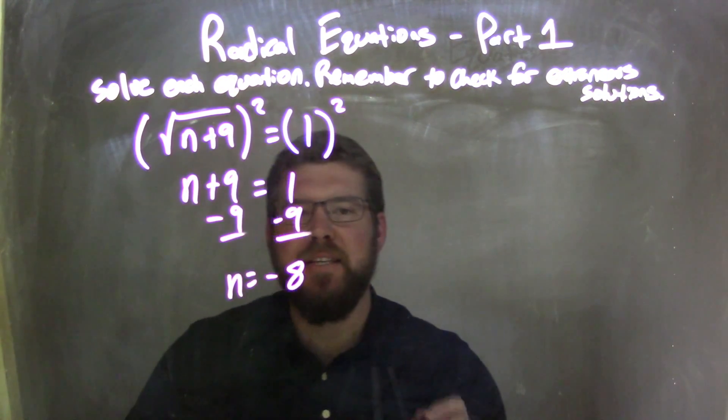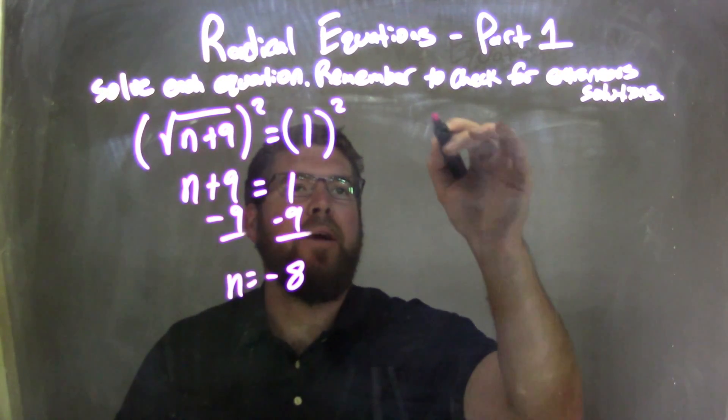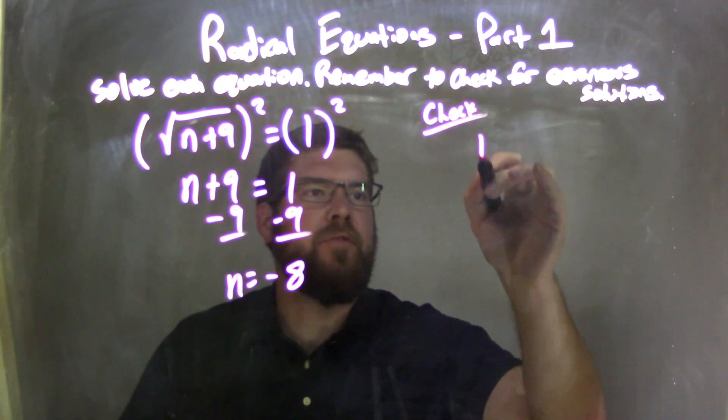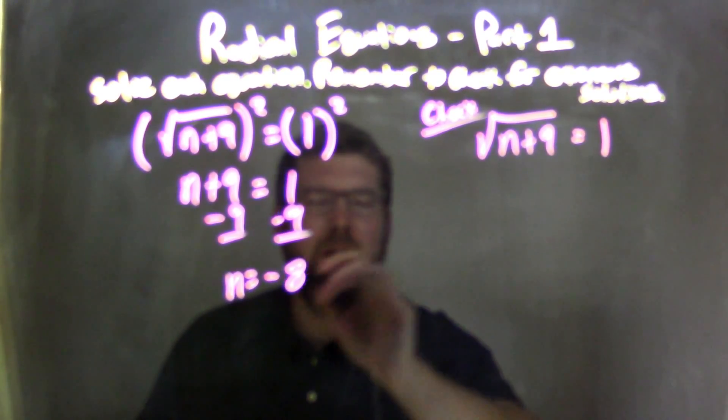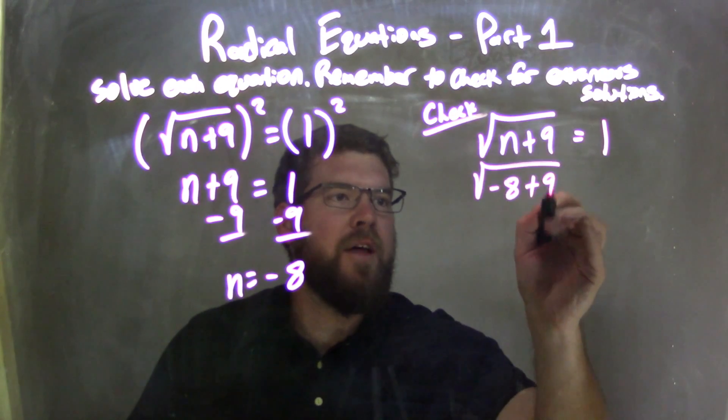Now I need to check to see if that's a real solution or extraneous solution. So I'm going to rewrite my equation. I'm going to check it here. Square root of n plus 9 equals 1. Plug negative 8 in for n, so square root of negative 8 plus 9 equals 1.